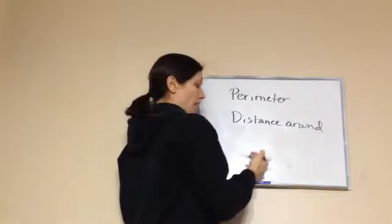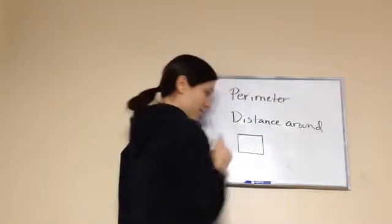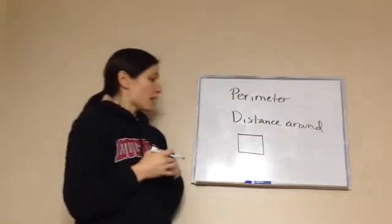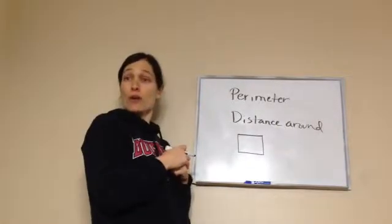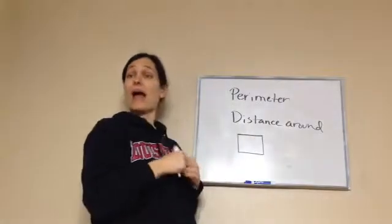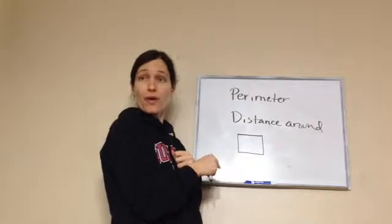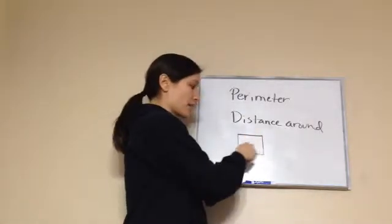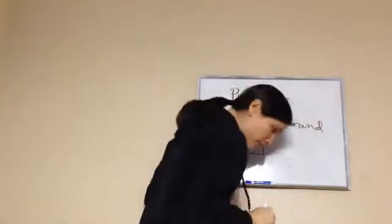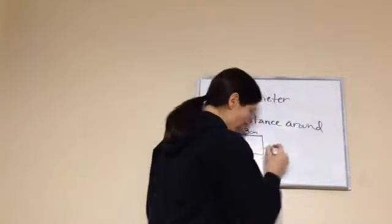Distance around a polygon. So for example, let's say we had a backyard and we put up a fence. We put fencing all around it. If I need to know how much fencing I needed, I'm actually finding the perimeter - how far it is around.